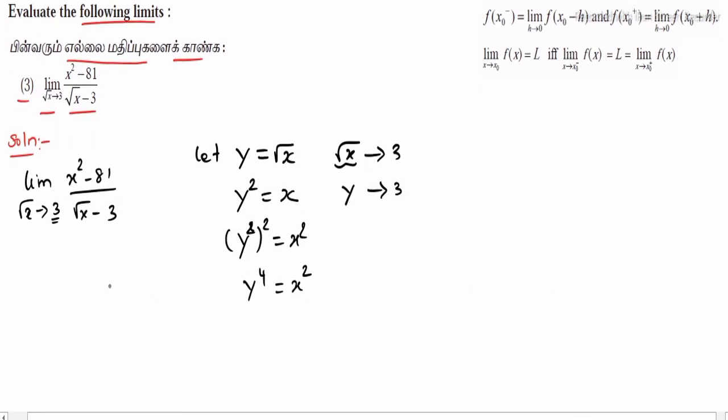So let's change the limit. This limit becomes capital Y tending to 3. This x² value changes, so this is Y⁴ minus 81 divided by root x value, capital Y minus 3. So if we solve this problem...